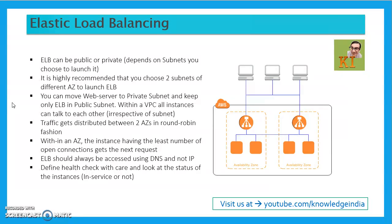Traffic gets distributed across two availability zones in a round-robin fashion. For example, with one subnet in AZ-A and another in AZ-B, the first request goes to A, the second to B, and so on. Within each availability zone, if there are multiple instances, the next request goes to the instance with the least number of open connections. An ELB should be accessed only by its DNS name, not by IP address, because the DNS remains fixed while IP addresses keep changing.